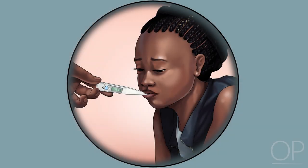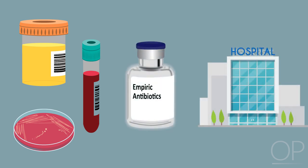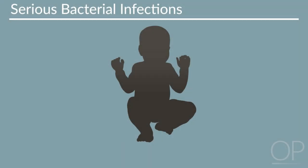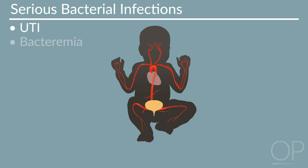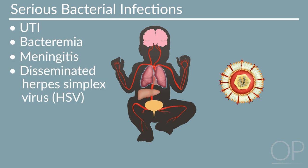Patients who are ill-appearing or have unstable vital signs should have a broad infectious workup, empiric antibiotics, and be admitted to higher levels of care. Infants younger than 90 days are at significant risk for serious bacterial infections, or SBI—for example, urinary tract infection, bacteremia, or meningitis—or even disseminated herpes simplex virus, or HSV infection, without overt symptoms.